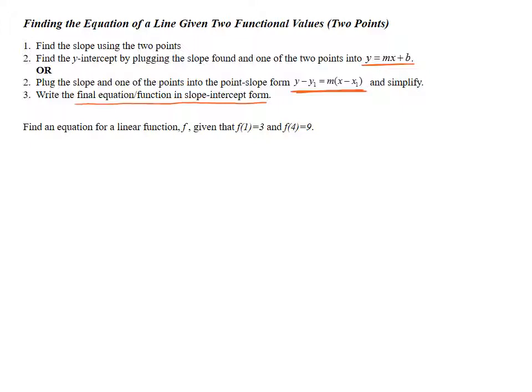Say we want to find an equation for linear function f given that f of 1 is equal to 3 and f of 4 is equal to 9. Well, a little reminder. These functional values are really just telling me I've got two points. Remember, the input is the x value. The output is the y value. So this statement of f of 1 equals 3 is just telling me I've got point (1,3). Likewise, f of 4 equals 9 is telling me I've got point (4,9).